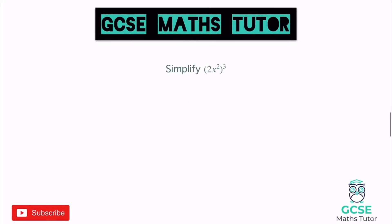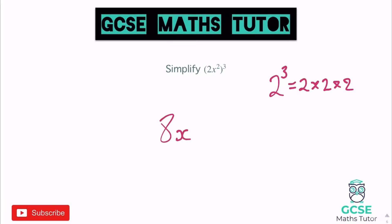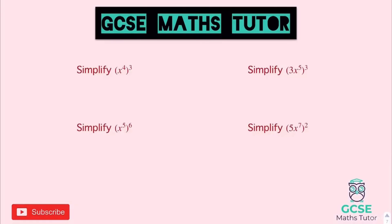With a number involved, like (2x squared) to the power of 3, treat numbers as numbers: 2 cubed is 2 times 2 times 2, which is 8. Then apply the bracket rule to the x: multiply the powers, 2 times 3 gives 6, so x to the power of 6. Final answer: 8x to the power of 6. This is equivalent to 2x squared times 2x squared times 2x squared — multiplying the 2s gives 8, and adding three 2s gives the power of 6.